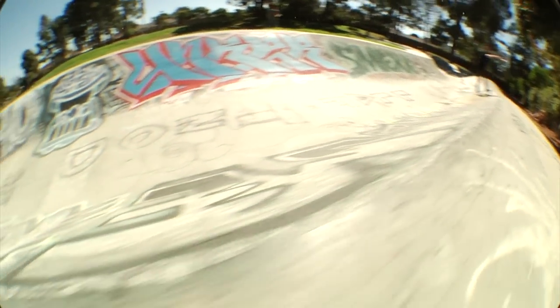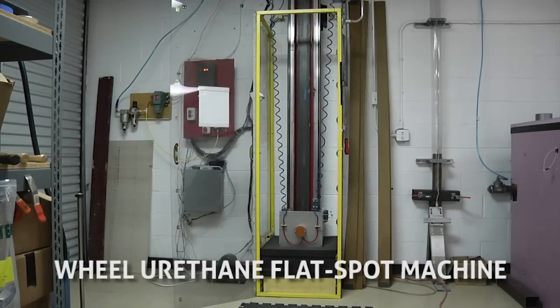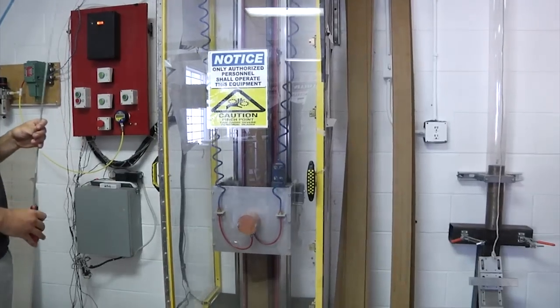Now let's take a look at those machines. This is the wheel urethane flat spot machine. It does just that. It flat spots a test wheel.